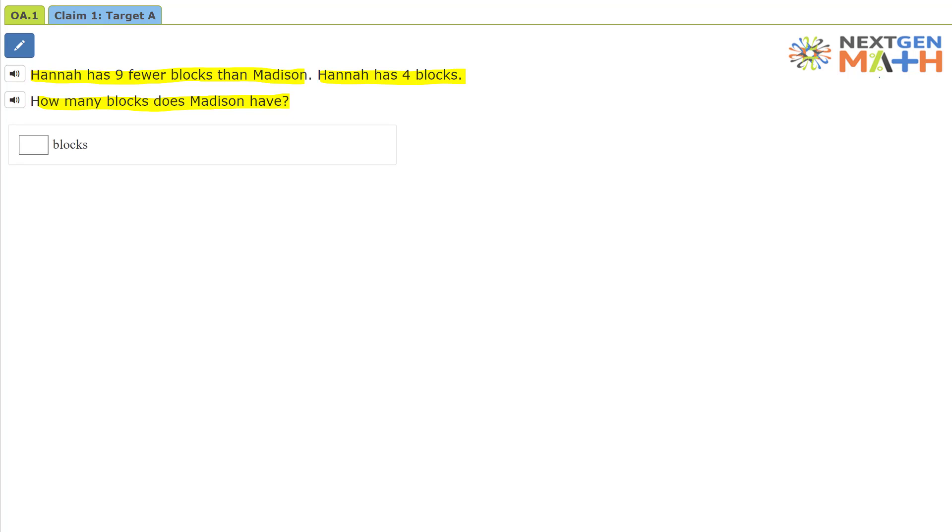Well, let's first ask the question, who has the most blocks? Well, in reading the problem, Hannah has nine fewer blocks than Madison. So that means that Madison has the larger number.